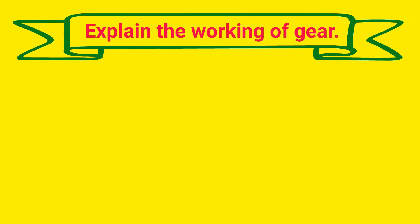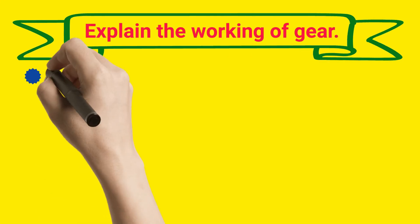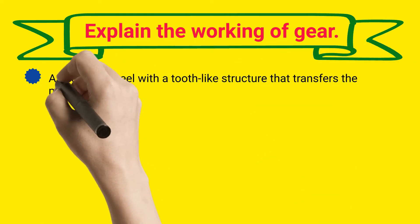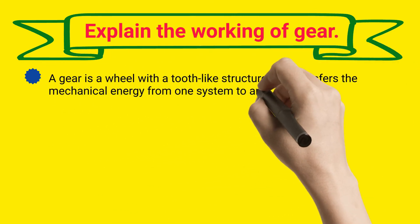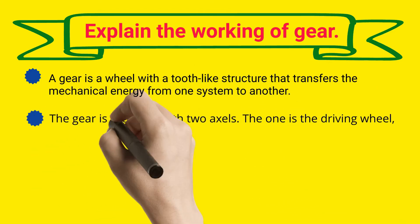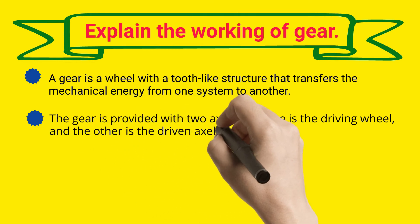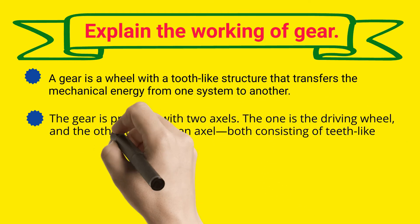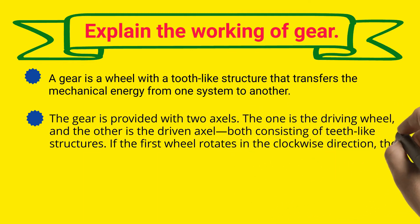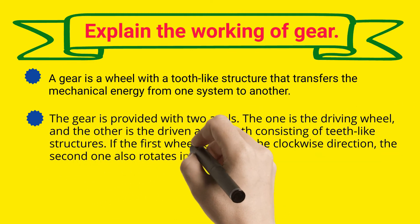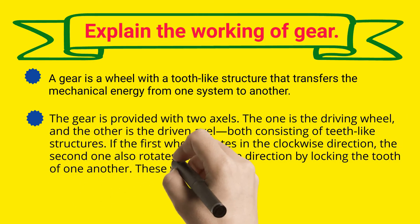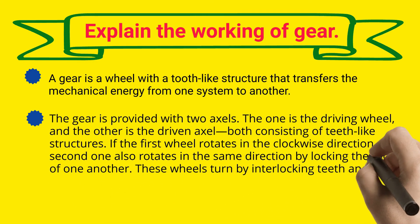Explain the working of gear. A gear is a wheel with a tooth-like structure that transfers mechanical energy from one system to another. The gear is provided with two axles — one is the driving wheel and the other is the driven axle, both consisting of teeth-like structures. If the first wheel rotates in the clockwise direction, the second one also rotates in the same direction by locking the teeth of one another, and these wheels promote mechanical energy through interlocking teeth.